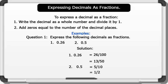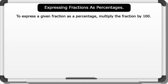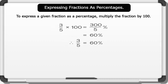That's awesome! Now let's express fractions as percentages. To express the given fraction as a percentage, multiply the fraction by 100. The diagram on the board shows how a fraction is expressed as a percentage. In the case of 3 over 5: multiply the fraction by 100 — 3 over 5 times 100 equals 300 divided by 5, which gives us 60%.